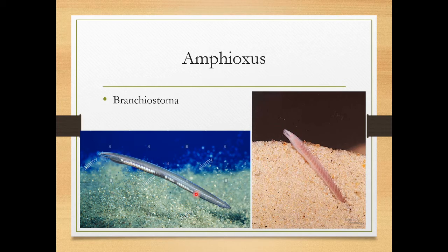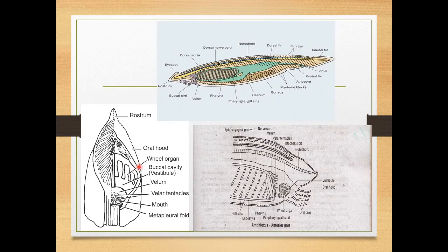Amphioxus is a small, transparent, superficially fish-like animal with a laterally compressed body pointed at both ends. It looks like a fish but differs from fish in the absence of a head, jaws, paired fins, scales, etc. However, there is a fin present along the dorsal line — a dorsal fin.